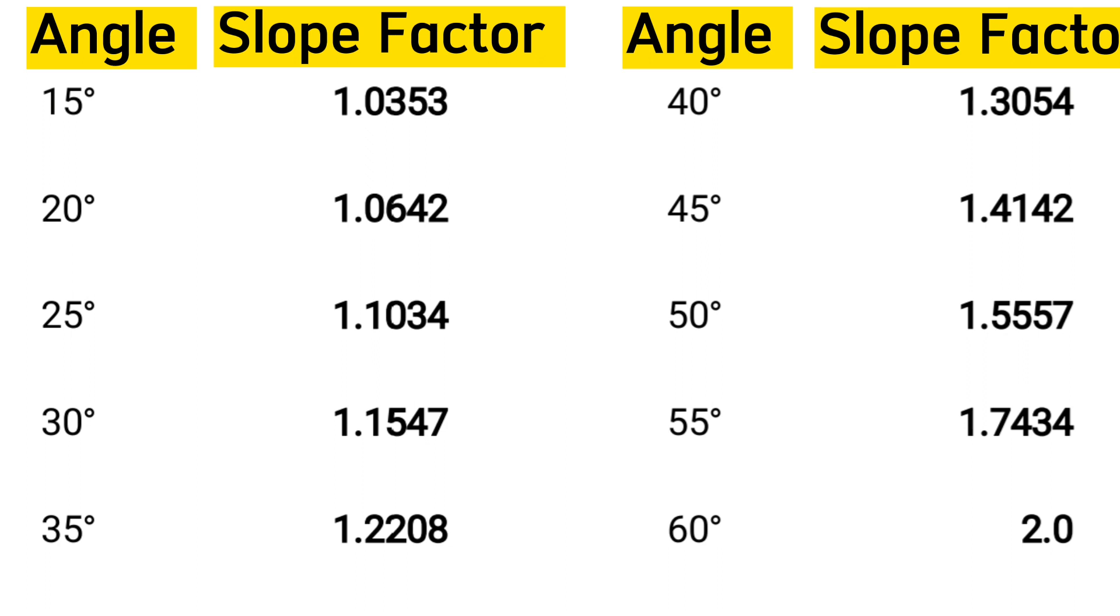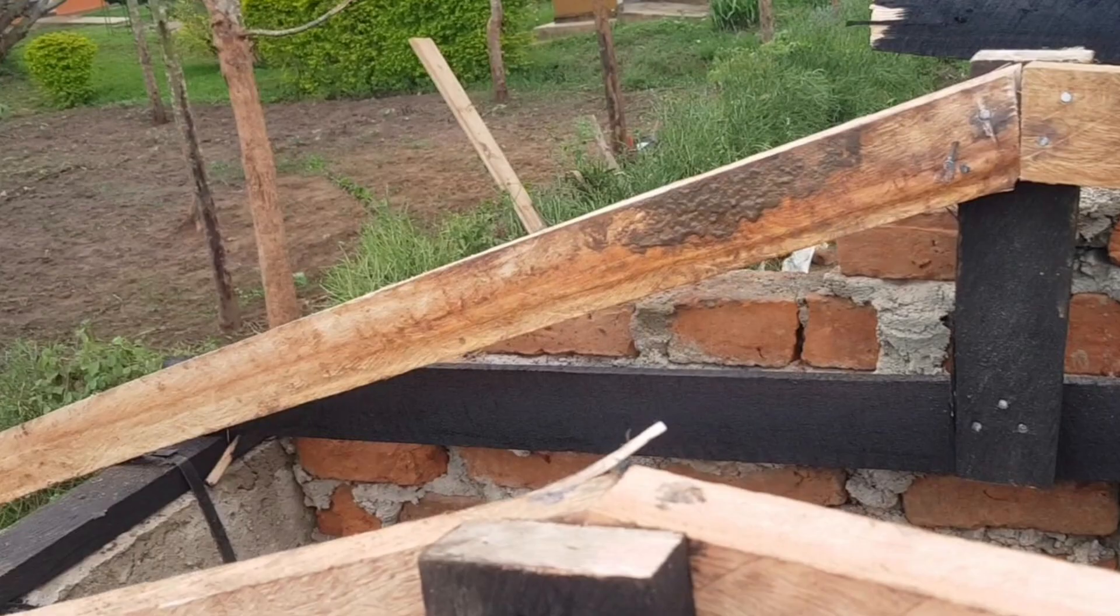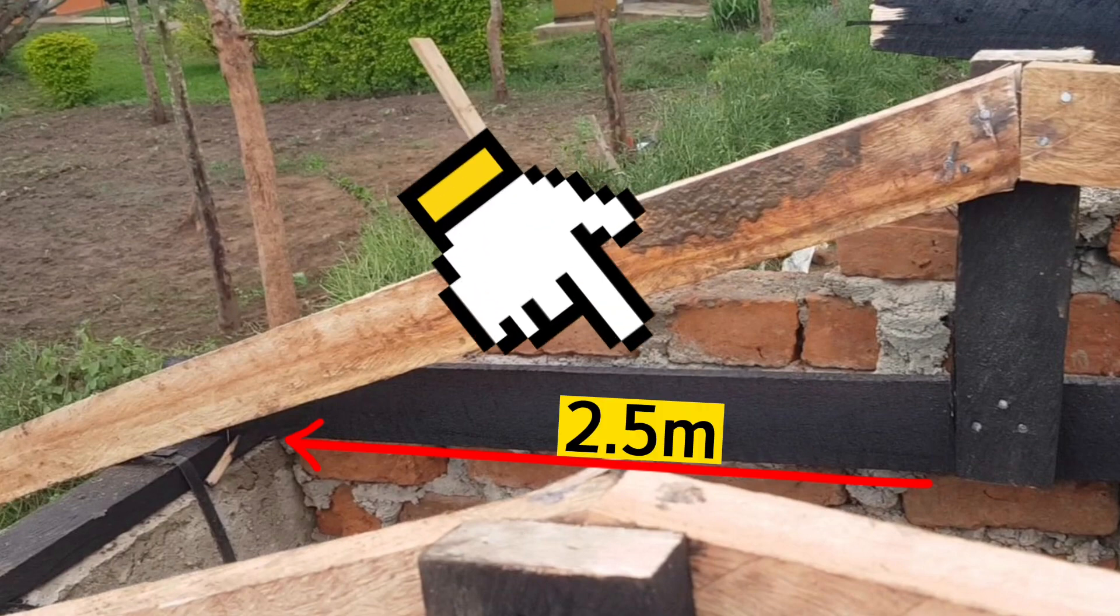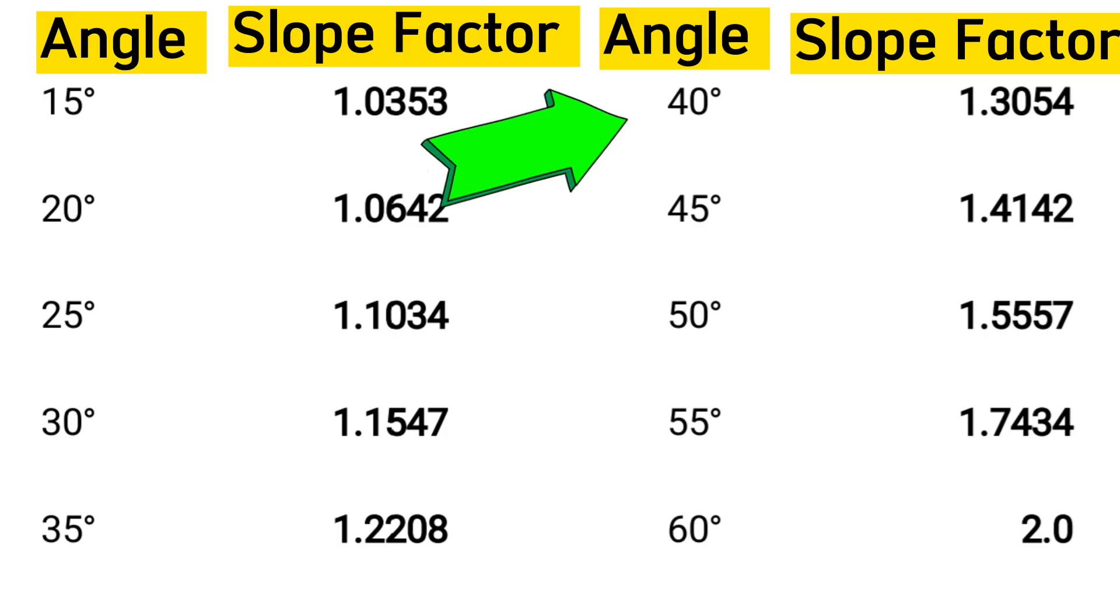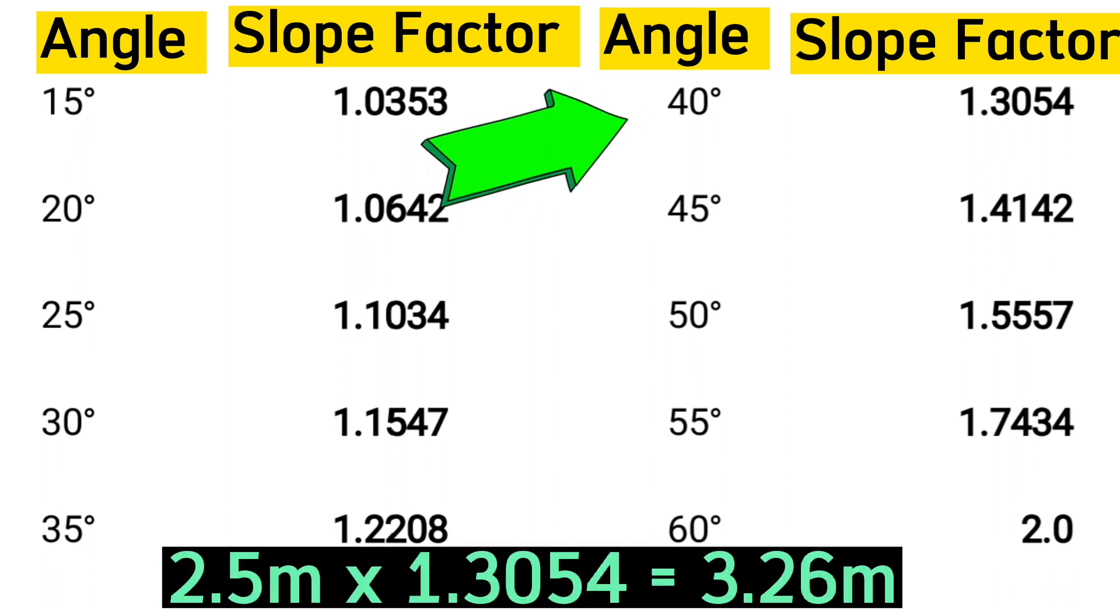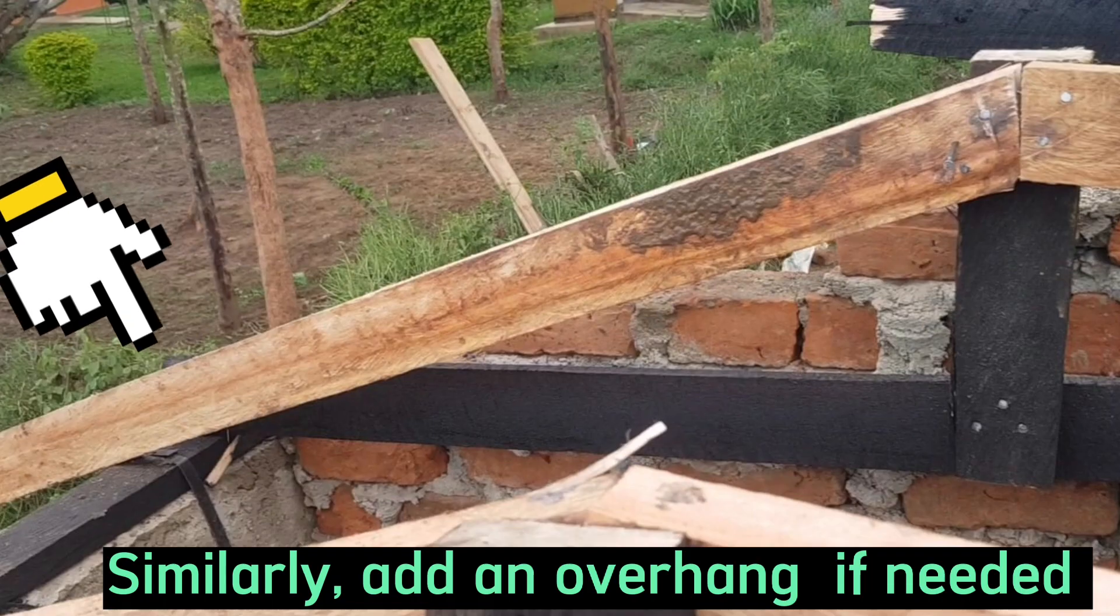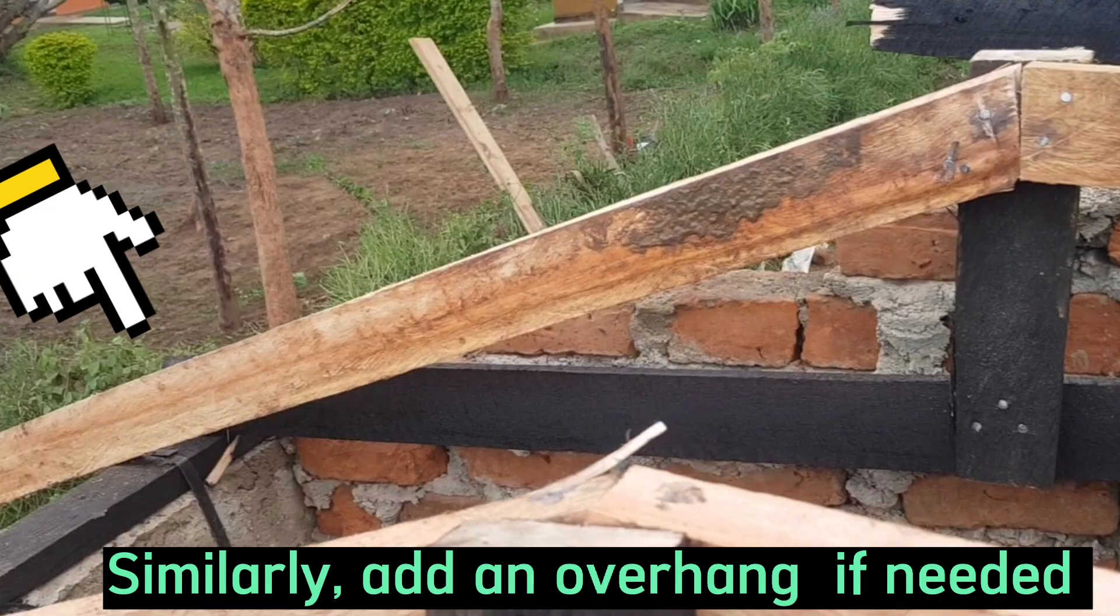Once you know your slope factor, simply multiply it by the run of your roof to get the length of your rafter. Using our previous figures, if the run is 2.5 meters and your roof pitch is 40 degrees, you get 2.5 meters multiplied by 1.3054, which will give us 3.26 meters. Similarly, you can add an overhang if needed.